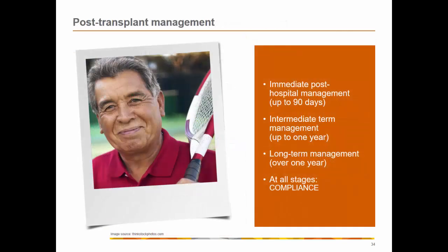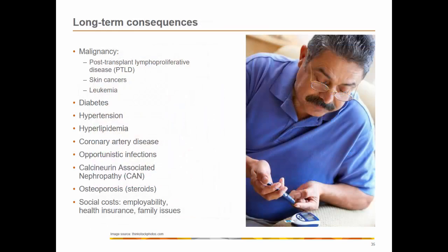Post-transplantation management is divided into immediate — up to 90 days — intermediate — up to one year — and long-term — over one year. Compliance is the best way to avoid rejection. Post-transplantation complications can include rejection, infection, renal insufficiency, atherosclerosis, and even cancer.